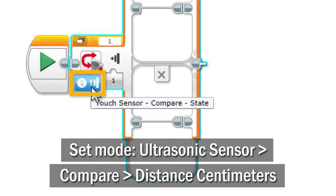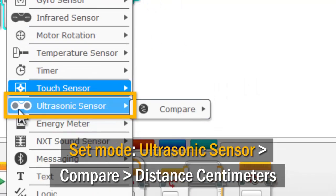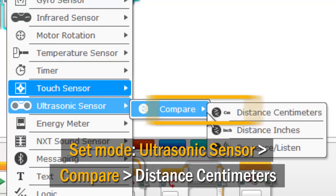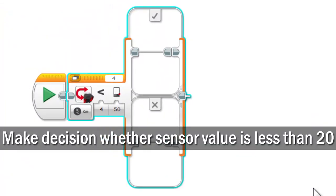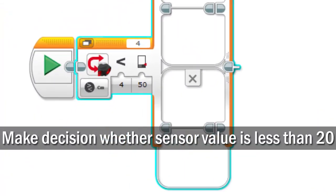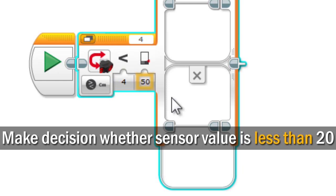Set its mode to ultrasonic sensor, compare, distance centimeters. Set it to make its decision based on whether the ultrasonic sensor's value is less than 20 centimeters.